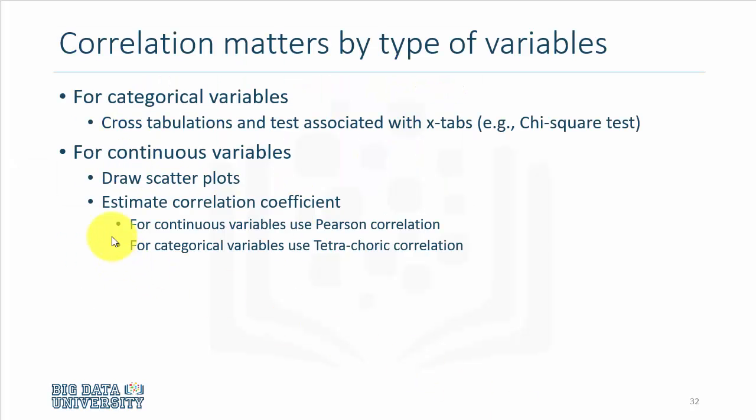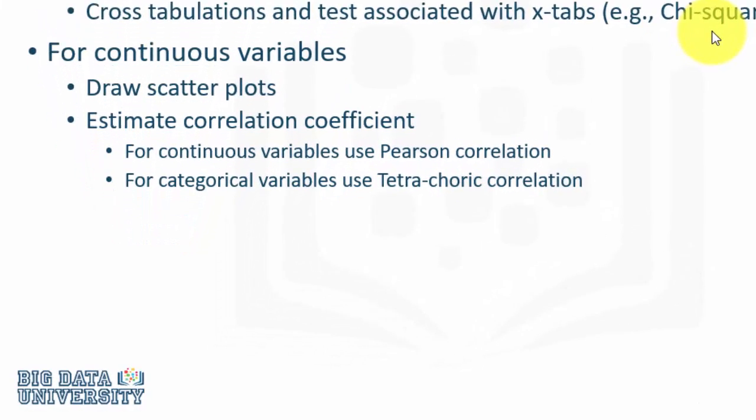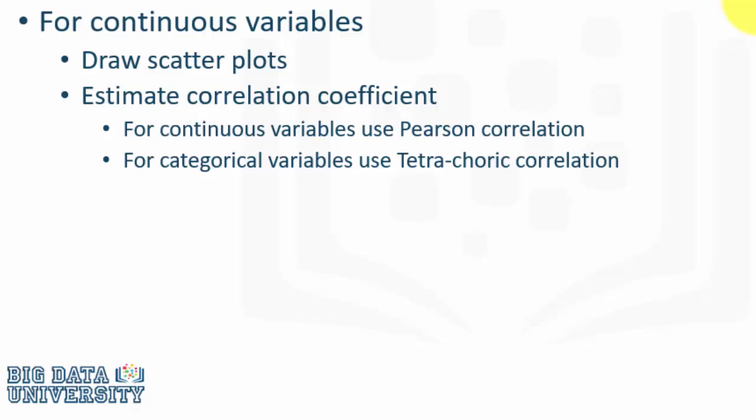For categorical variables, we can use cross tabulations and the test associated with it is chi-square test. And for continuous variables, one way of looking at the correlation between two continuous variables is to draw a scatter plot and see if there is a trend.